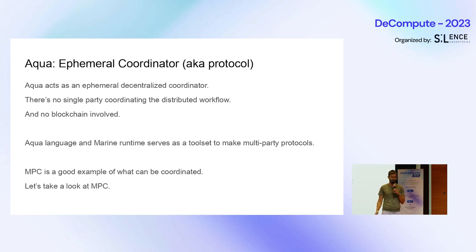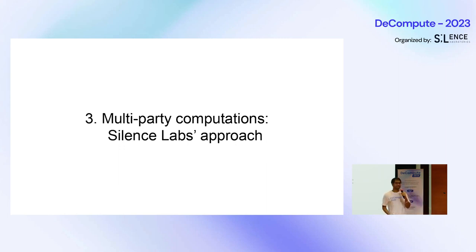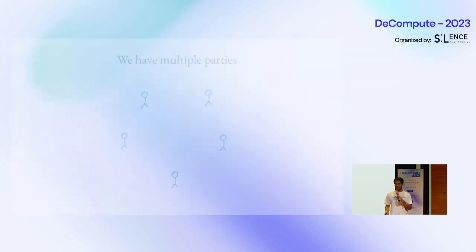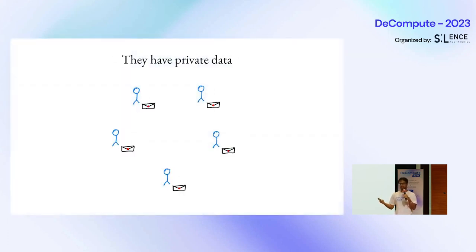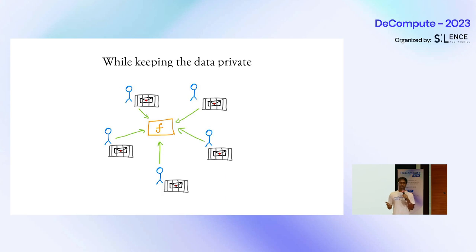For MPC, we collaborate with Silence Labs. MPC: we have multiple parties, they have secrets, they want to compute some function together over the data, and they want to keep it private. That's the overview for MPC. Today I want to talk about a subset of MPC — threshold signature schemes — which usually comes with three functions: distributed key generation (DKG), distributed sign generation, and key refresh.